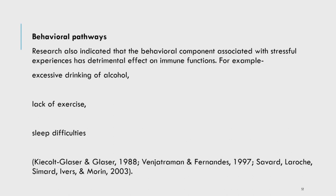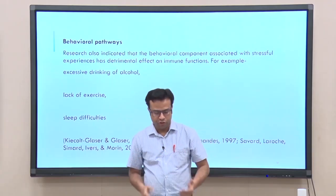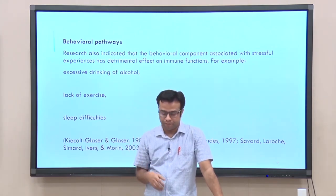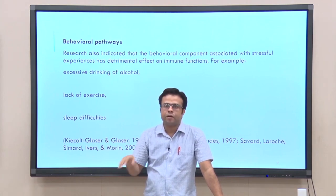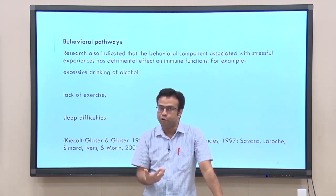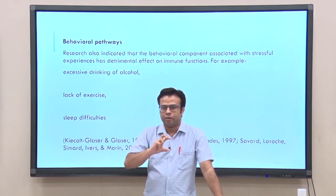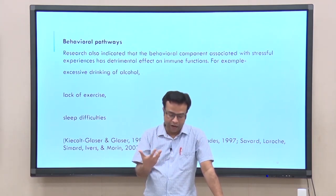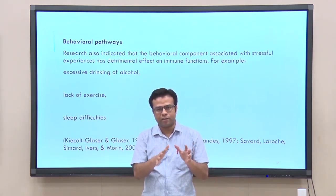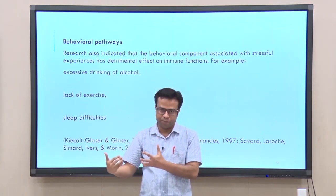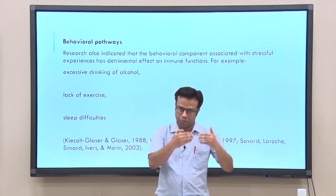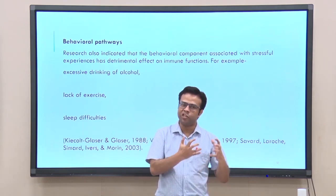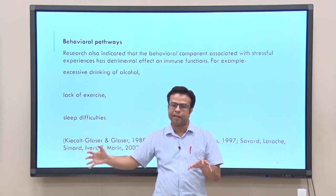Apart from hormonal pathways, there are also behavioral pathways. Research indicates that behavioral components always associated with stressful experiences can have a detrimental effect on immune functions. Particularly, behavioral aspects of stress such as excessive alcohol drinking, lack of exercise, inactivity, and sleep difficulties are all connected with decreased immune function. So stress can directly suppress immune function through release of stress hormones, or indirectly through behavioral changes that further have a detrimental effect on immune function.